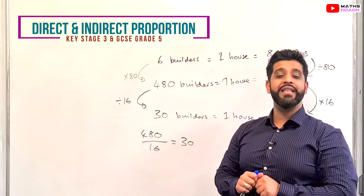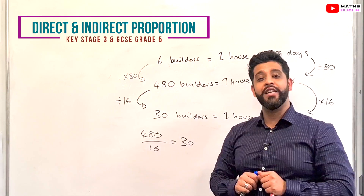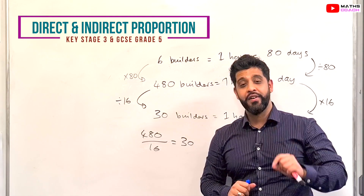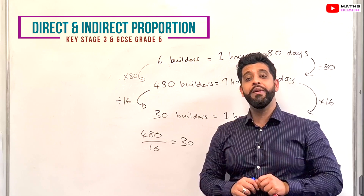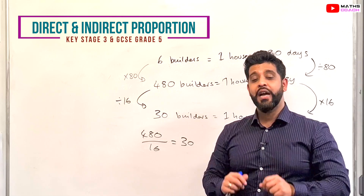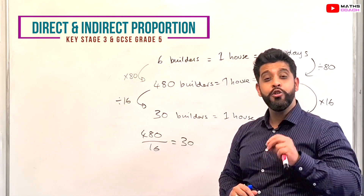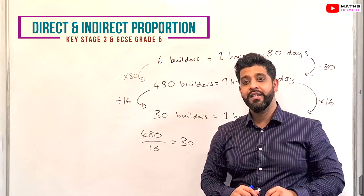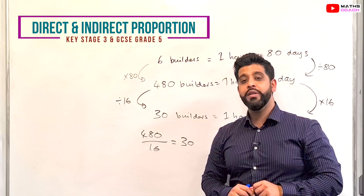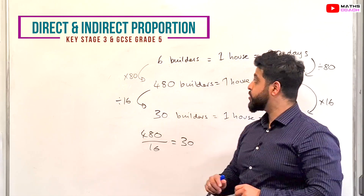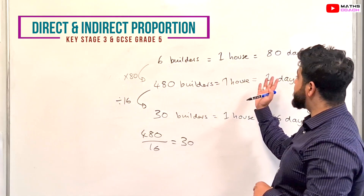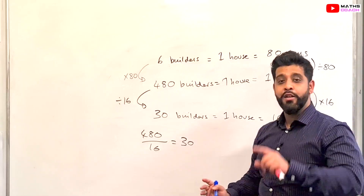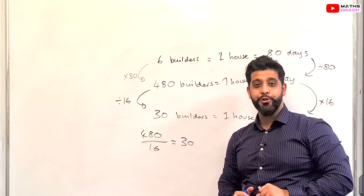Hello and welcome to this lesson for Key Stage 3 and GCSE grade 5, where we'll be looking at direct and indirect proportion using a very clever technique called the unitary method, so that by the end of this lesson you'll be able to answer questions such as this, so stay tuned.